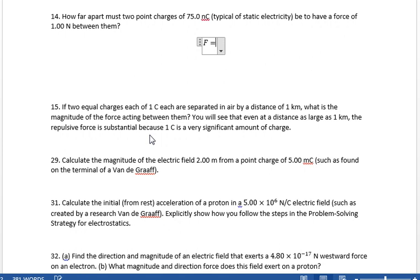The equation we're talking about here is F equals K times magnitude of Q1, Q2, divided by R squared.